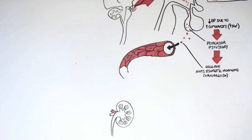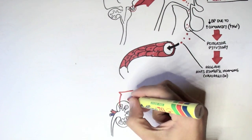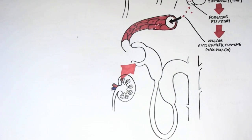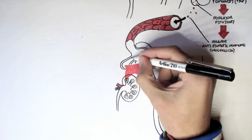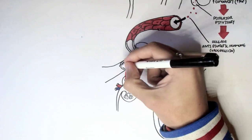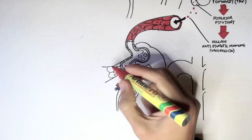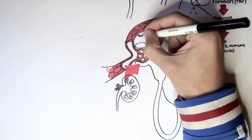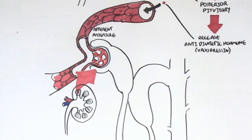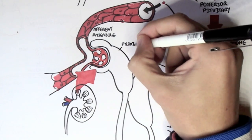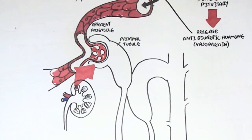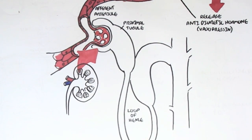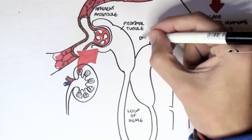Here we have the kidneys. The functional unit of the kidneys is the nephron. The nephron itself is composed of the glomerulus, the proximal convoluted tubules, the loop of Henle, the distal convoluted tubules, and the collecting ducts, with the afferent arteriole coming in and the efferent arteriole leaving out.